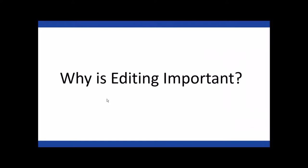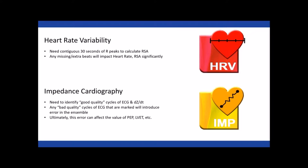So why is editing important? Sometimes we're looking at segments of 120 or 300 seconds of data. Does it really matter if the occasional R peak is not marked correctly? Absolutely. It's a good time to mention the difference between editing for heart rate variability versus impedance cardiography. For heart rate variability, we need a 30-second contiguous window of peaks to calculate RSA. If you miss or add any beats, it's going to increase or reduce the variability and affect your RSA measure.